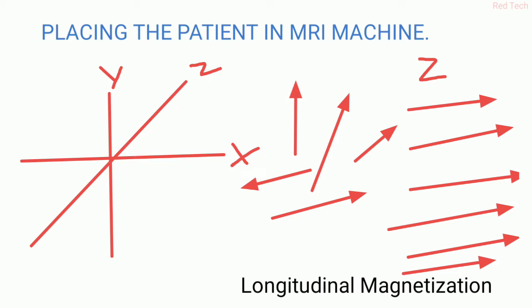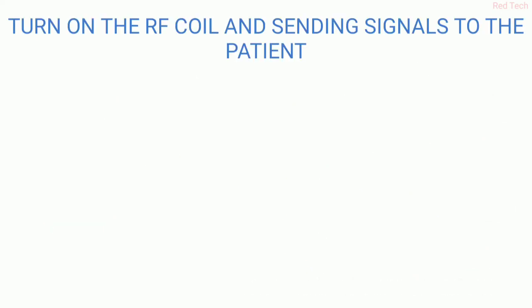This is basically longitudinal magnetization, or you can say along the long axis of the patient. The second step is turn on the RF coil and send signals to the patient.